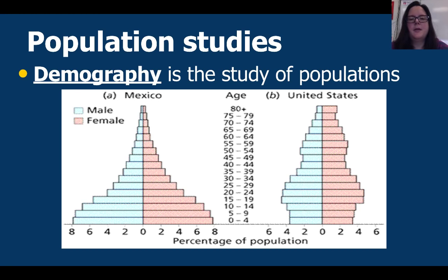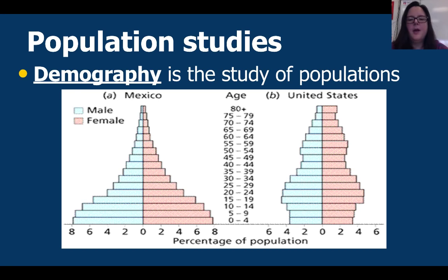There are people who study populations, and this is called demography. Demography is the study of populations. Go ahead and look at this graph — look at the x-axis, look at the y-axis, make comparisons, and be sure you look at the key. What do you notice about these two populations? What are some differences between the populations in Mexico versus the United States based on age and gender?